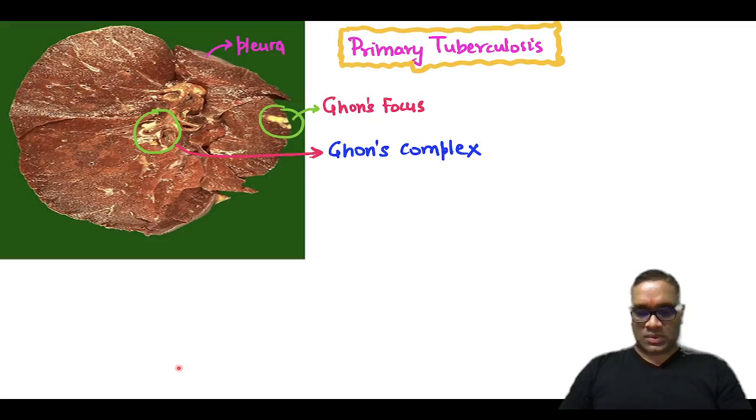If you look at the cut section of the lung, you can notice this is the part of the pleura and then subpleural fibrocaseous yellow color. You can see this yellow color is the fibrocaseous nodule, that is the Ghon's focus. And similar yellow color nodule you can see in this area, which is corresponding to the hilar lymph node, these are the Ghon's complexes.